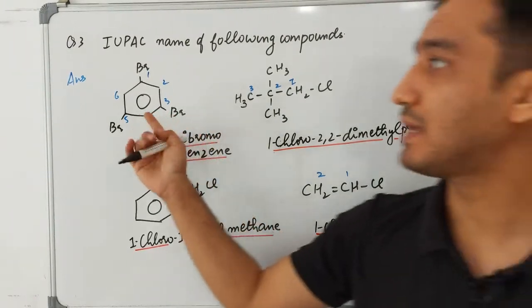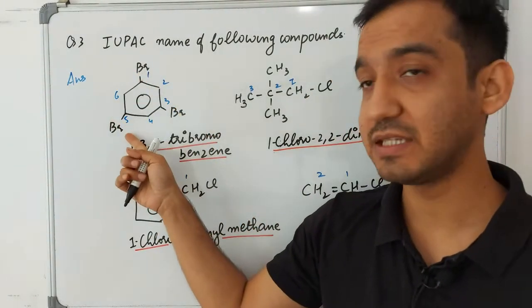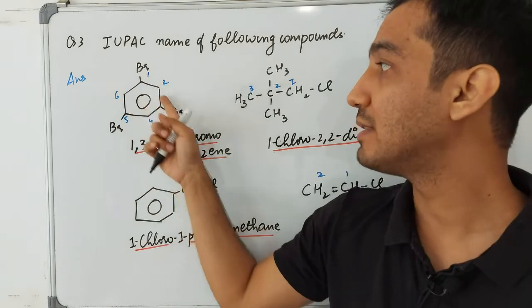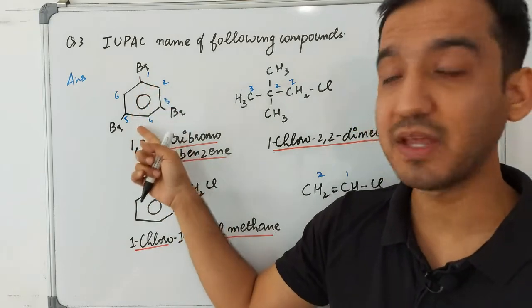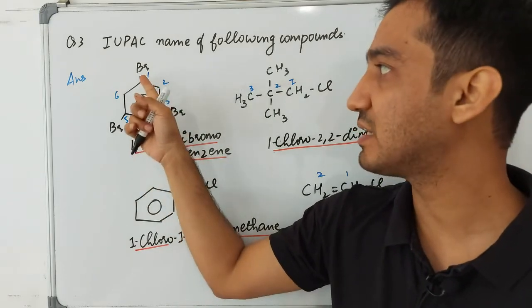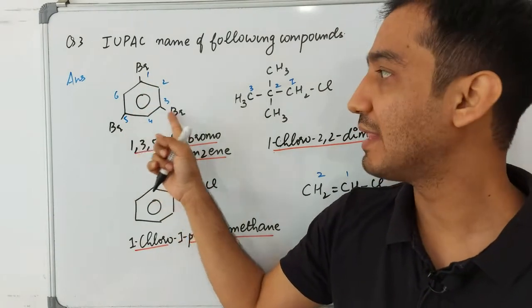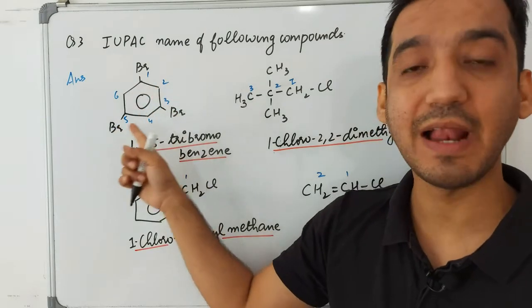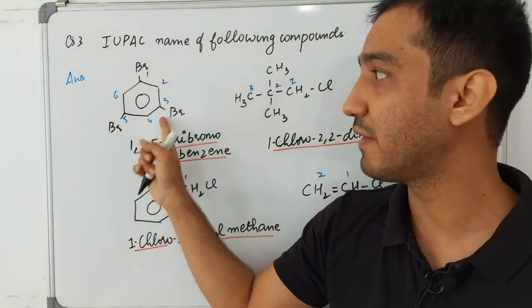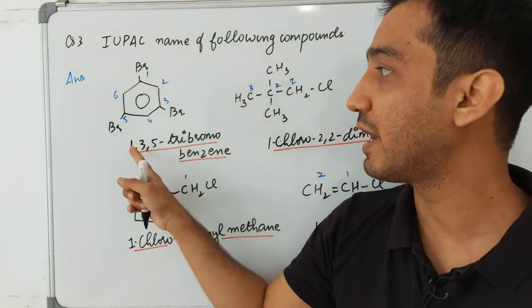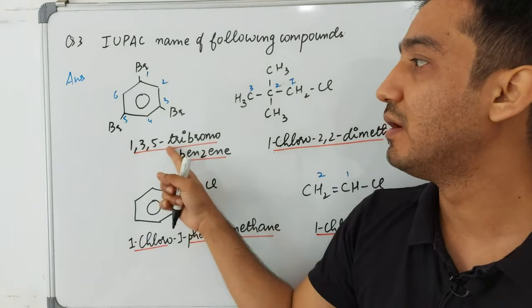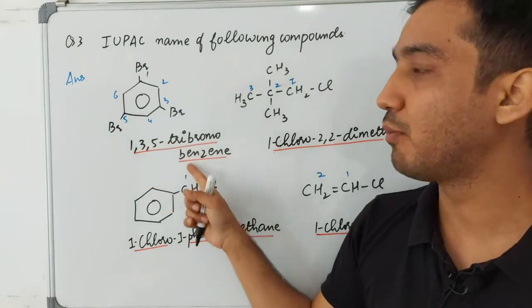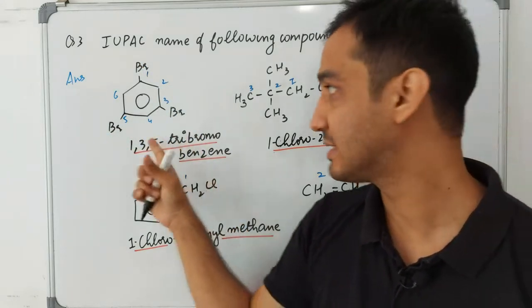Question three is the IUPAC name of the following compounds. In the first compound, bromine is attached to a benzene ring at the 1, 3, and 5 positions. Since there are three bromine substituents, the name is 1,3,5-tribromobenzene.